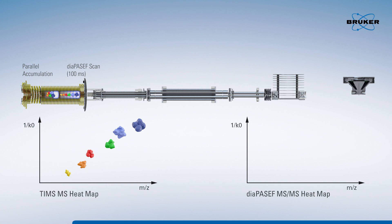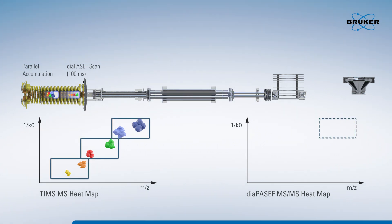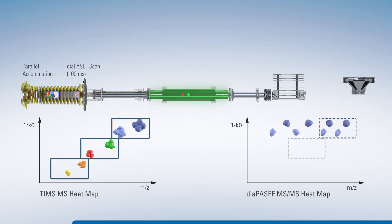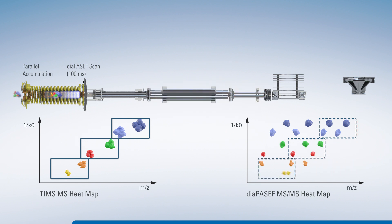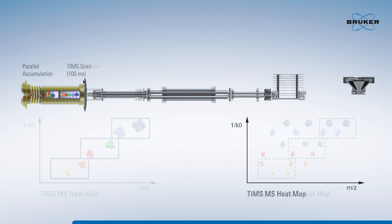Data-independent analysis methods were developed to solve it. In DIA methods, all ions in a given m/z window are fragmented in every run. So in principle, everything can be identified and compared from run to run.